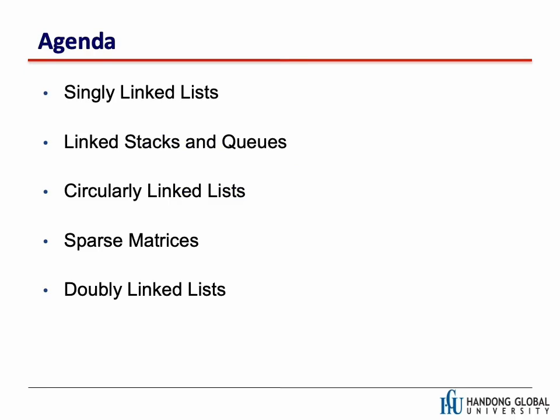In this chapter we will cover a couple of different topics. First, we will talk about what a linked list is — the definition and some implementations. Then we will implement stacks and queues based on the linked list. Since we defined stacks and queues as abstract data types, we can change our implementations while keeping the specifications, as long as the implementation meets the specifications. We will also talk about circularly linked lists, applying linked lists to sparse matrices, and finally briefly mention doubly linked lists.